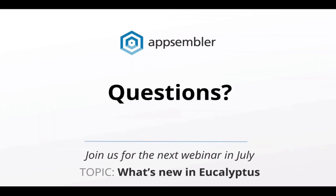Thank you, Nate. As we said, it was going to be a little longer than 15 minutes because there was so much to cover — and even that doesn't begin to cover all the possibilities. It's a big advantage of having an open source system you can tie into in so many ways. There is a handout available in the GoToWebinar panel under Handouts — a case study of the Salesforce integration we did with Metalogix. First question: is the Course Discovery API enabled by default and is it only available in Dogwood?